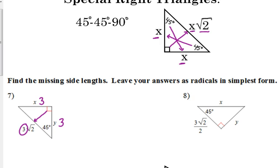You just got to remember this relationship. Now, number 8, feel the difference. They give us one of the legs. So this number right here is x. So we can go ahead and say that y is 3 square root 2 over 2. Because both the legs have the same measure.